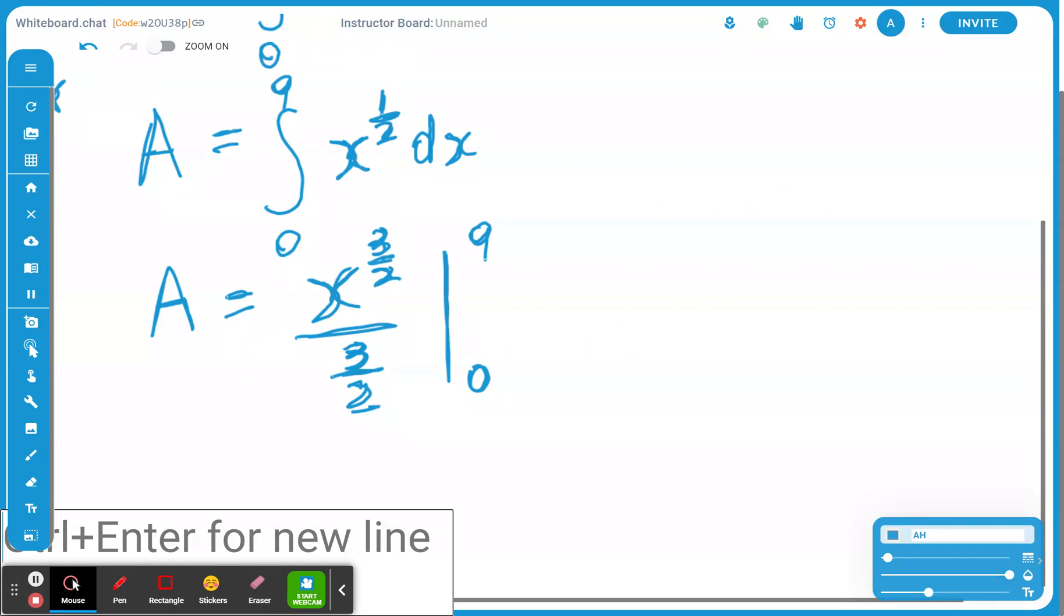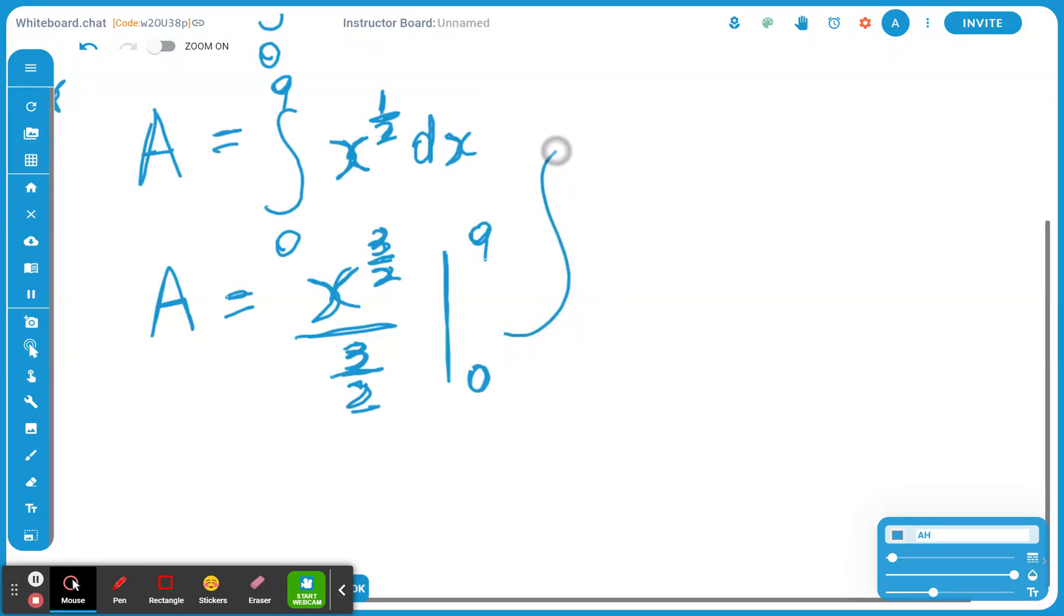Now, let's see. I'll draw an arrow here. The area equals to, again, you're going to plug in 9 first. So 9 to the power of 3 over 2. Now, since you're dividing it by 3 over 2, that is the same as multiplying it by 2 over 3. And you're going to subtract. And you're going to plug in the same thing. And notice, if you plug in 0, this entire second part is going to become 0.